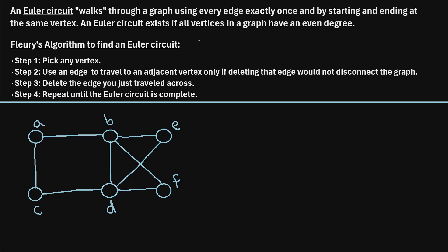So once we've identified that an Euler circuit exists in a graph, we can use something known as Fleury's algorithm to actually find an Euler circuit. This algorithm uses the following four steps. Step one: pick any vertex. Step two: use an edge to travel to an adjacent vertex only if deleting that edge would not disconnect the graph. Step three: delete the edge that you just traveled across. Step four: repeat this process until the Euler circuit is complete.